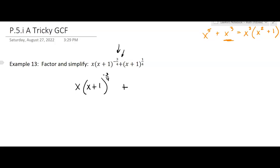They have x plus one. That's the base that they have in common. So which one has the smaller exponent, the negative three-fourths or the one-fourth? Well, the negative three-fourths, that's the smaller exponent.